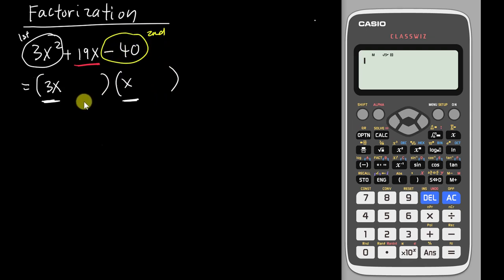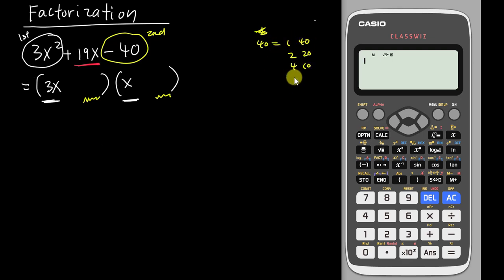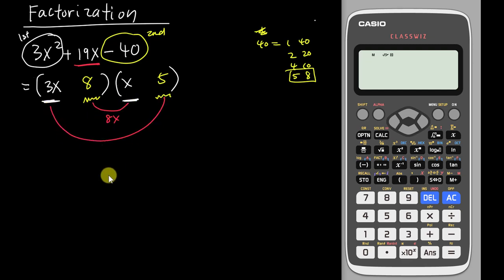The second step focuses on negative 40 — both numbers inside the brackets multiplied together must give negative 40. The factor pairs are: 1×40, 2×20, 4×10, 5×8. Say I accidentally put 8 and 5. Testing: 8 times x gives 8x, and 3x times 5 gives 15x. No matter how I add signs, I can't get 19 — adding gives 23x, subtracting gives 7x. So this combination is wrong.